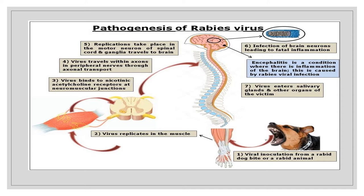Rabies virus is usually transmitted to humans by bites — 99% of cases involve rabid dogs. Transmission can occur via deep bites or scratches from an infected animal. Non-bite exposures include direct contact of saliva from an infected animal with mucosa or fresh skin wounds. Laboratory workers exposed to virus-containing aerosols are also at risk. Corneal or other organ transplantation is another route of exposure.